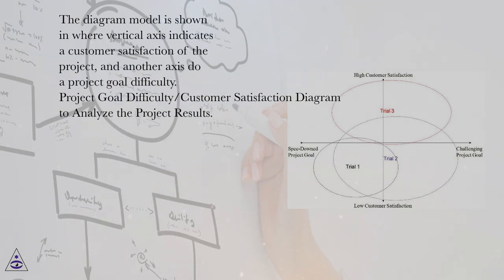The diagram model is shown where vertical axis indicates a customer satisfaction of the project, and another axis to a project goal difficulty. Project goal difficulty slash customer satisfaction diagram to analyze the project results.